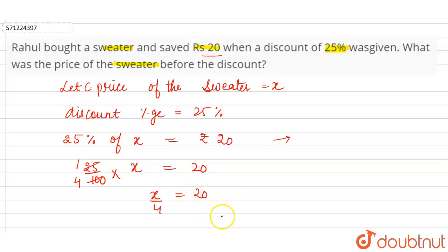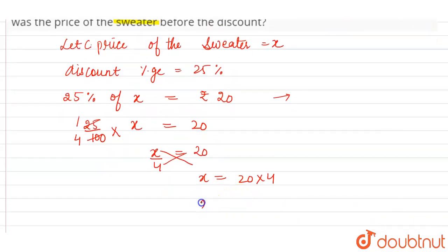Cross multiplying, x = 20 × 4. 20 × 4 means x = Rs 80. So the cost price of the sweater is Rs 80.